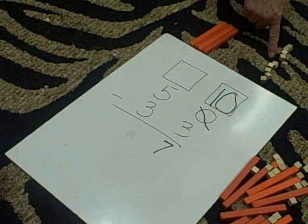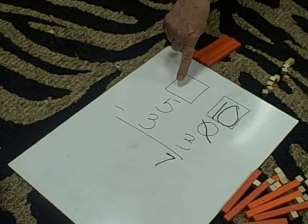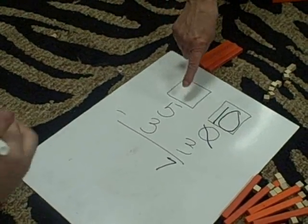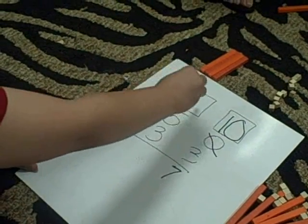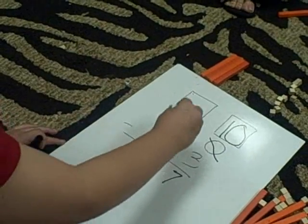Now when we move the ten over, how many tens do we have left? Four. Four. So how are we going to change this number? Cross out the five and put four above it. Excellent. Let's do that now.